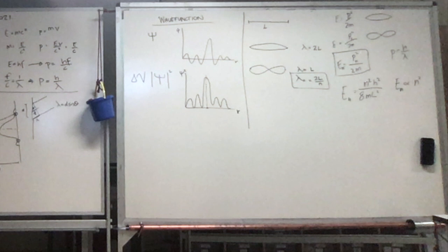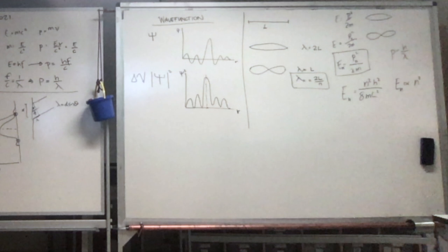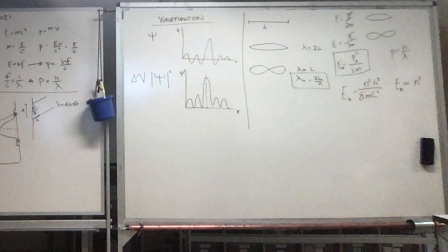N represents the order of the electron energy level — so n = 1 would be the ground level, n = 2 would be the subsequent level. This is probably one of the hardest things to wrap your head around, but as long as you can grasp this concept, it will come back to you pretty easily.